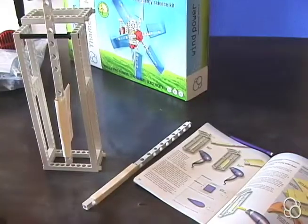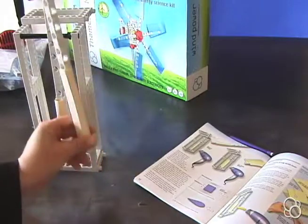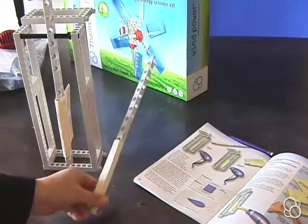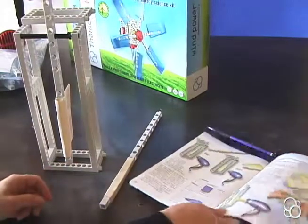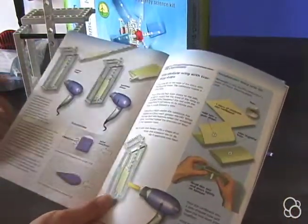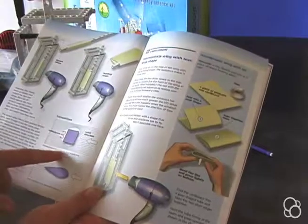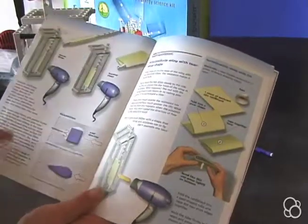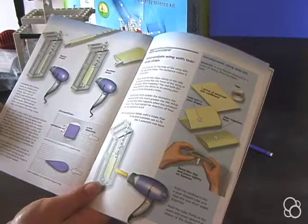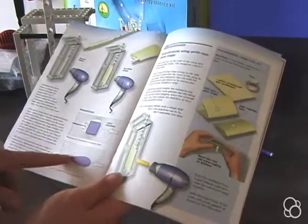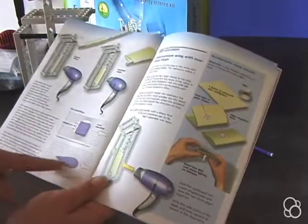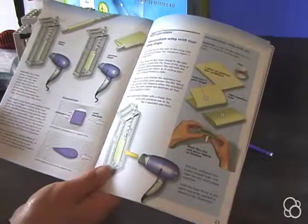So you probably noticed that this shape, the square shape got blown back farther and more than this shape, the teardrop shape and that's because the square shape creates more resistance and there's more turbulence. So it gets pushed farther back whereas the teardrop shape creates less resistance. The wind can go right around it so it doesn't get blown back as much.